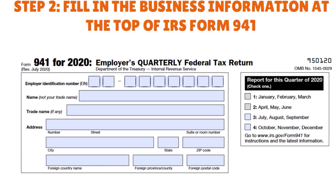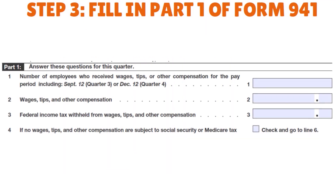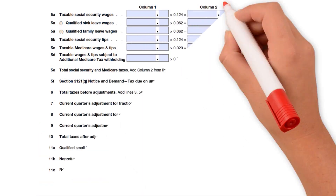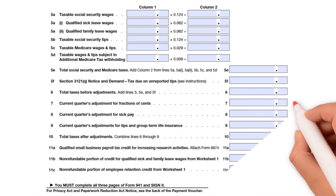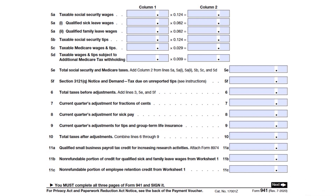Step three: fill in Part 1 of Form 941. Once you've entered your basic business information, you move to Part 1. Here you enter the number of employees, wages, federal income tax withheld from wages, and tips and compensation — that's line 3. Line 4: if no wages, tips, or other compensation apply, go straight to line 6. Line 5 covers taxable Social Security wages, including qualified sick leave, qualified family leave wages, taxable Social Security tips, and line 5D.